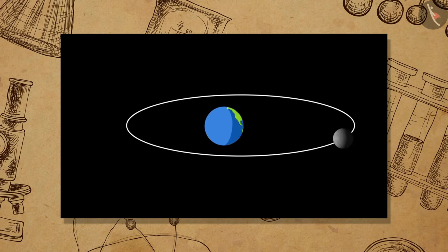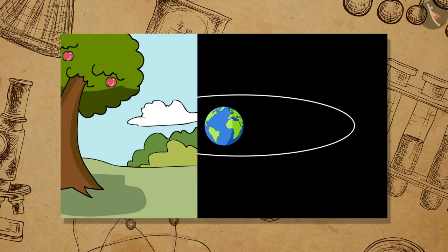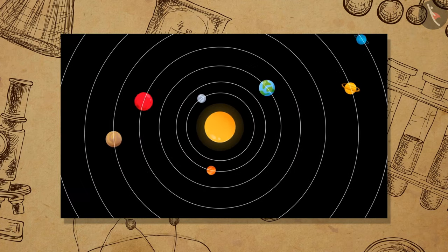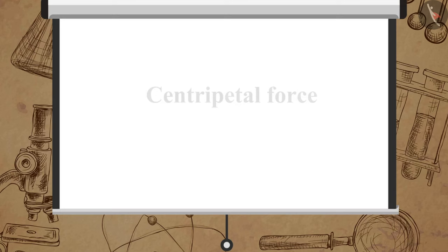Gravitational force is responsible for the motion of the moon around the earth, falling of objects on the surface of the earth, and for motions of the planets around the Sun.